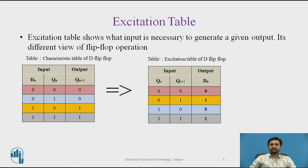Excitation table shows what input is necessary to generate a given output. During the design process, we usually know the transition from present state to next state and wish to find the flip-flop input condition that will cause the required transition. For this reason, we need a table that lists the required input for a given change of state. Such list is called excitation table. The following table shows the D type flip-flop excitation table. There are four possible transitions from present state to next state, and the required input conditions are derived from the information available from the characteristic table.